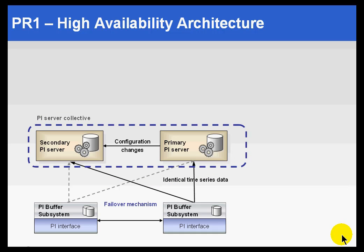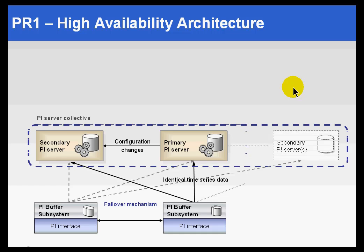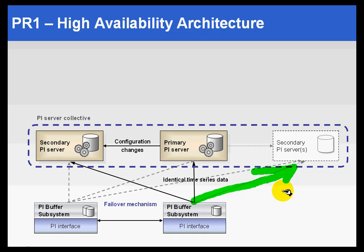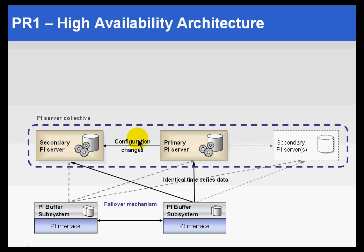To round out this discussion, if you were to add more servers to the collective, the PI Buffering Subsystem can automatically detect that those servers have been added and, without any need for manual configuration, it can start buffering to them as well. This means you have a lot of flexibility as to how many servers you put in the PI Server Collective — which is a little different from using the API Buffer Server, where you would have to configure everything manually.